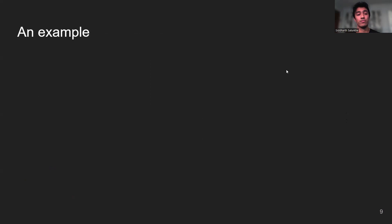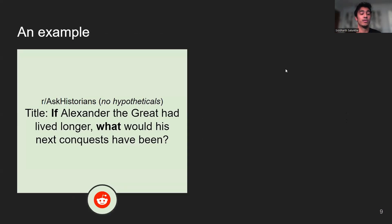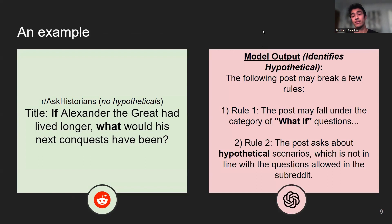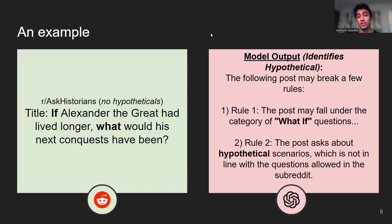An example I'd love to walk you through: in the r/AskHistorian subreddit, you're not allowed to ask hypothetical questions such as 'If Alexander the Great had lived longer, what would his next conquests have been?' The LLM actually detects that this will violate rule one and rule two of the AskHistorian guidelines, which are the rules against asking 'what if' questions or hypothetical scenarios. This is a good example of detecting a violating post.